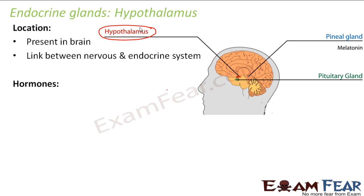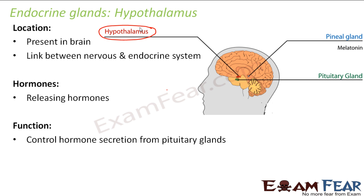The hormones secreted by the hypothalamus are called releasing hormones. These hormones control hormone secretion from the pituitary gland. The pituitary gland is a very important gland, which we will discuss next. The only function of the hypothalamus is to control hormone secretion from the pituitary gland.